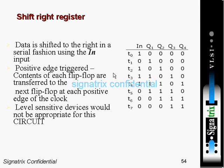In a shift register, data is shifted to the right in serial fashion using the in-input. Here is the in-input and these are the outputs. After every clock pulse, data is shifted — this one is shifting, shifted to this point, then there, here, here, and keeps on shifting.